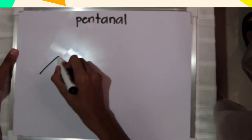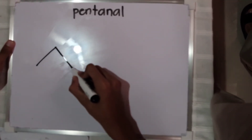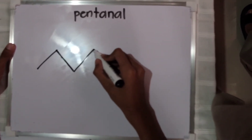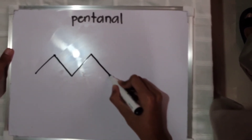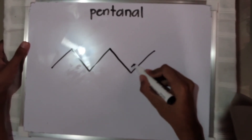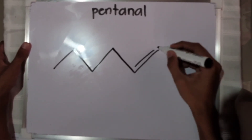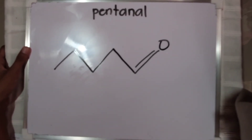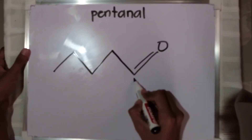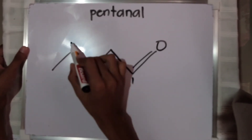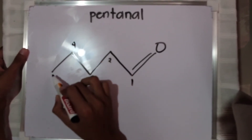That's pentanal. It has all single bonds, so it's an aldehyde. We don't need a number to say where the aldehyde is because it has to be at the very beginning — it has to be on carbon 1.